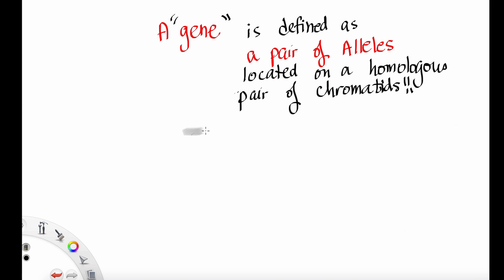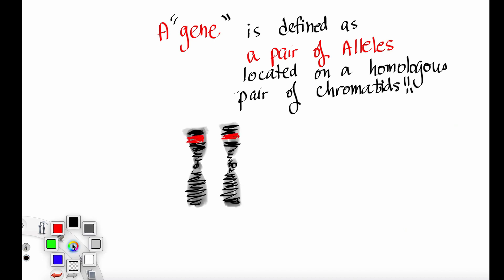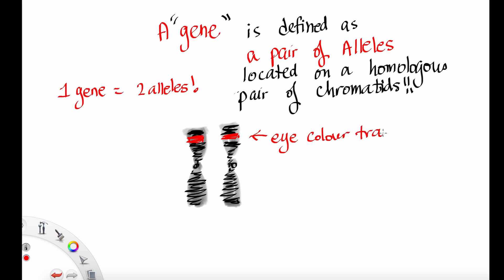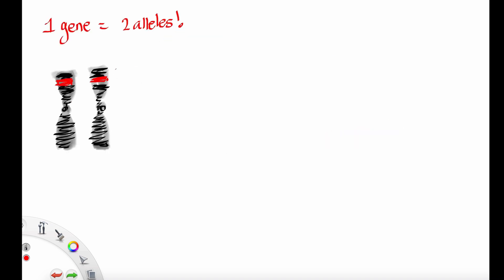A gene is defined as a pair of alleles located on a homologous pair of chromatids. So if you have two chromatids and they have alleles that code for the same thing, then we can say that the eye color gene has two alleles. One gene is equal to two alleles.